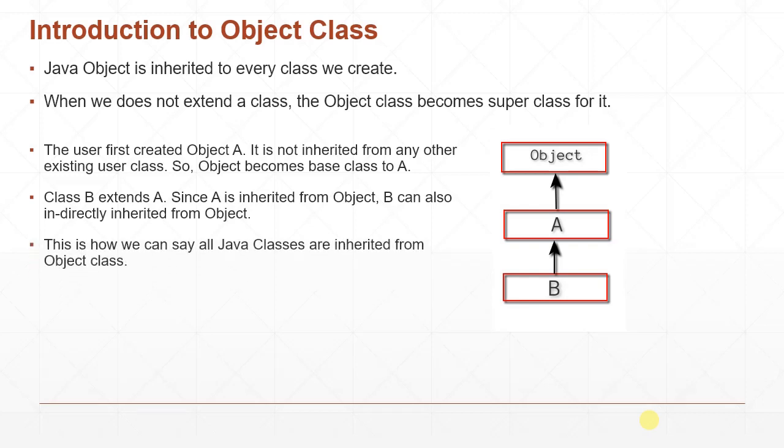This is how we can see that all Java classes are inherited from Object class. Class A is inherited from Object even though we don't specify any inheritance relation — Java will automatically impose it. Then when we create class B that extends class A, class B is also derived from Object because A is derived from Object.